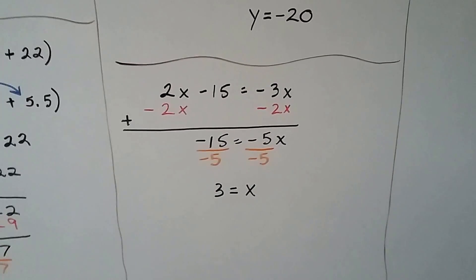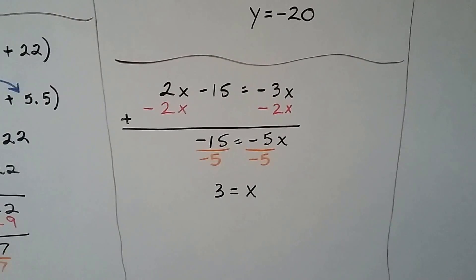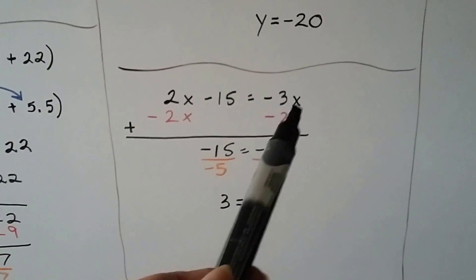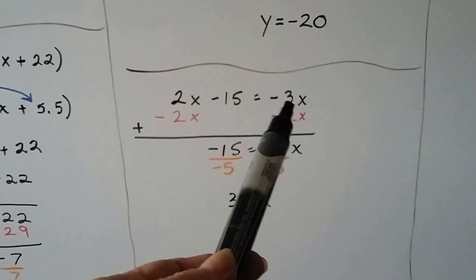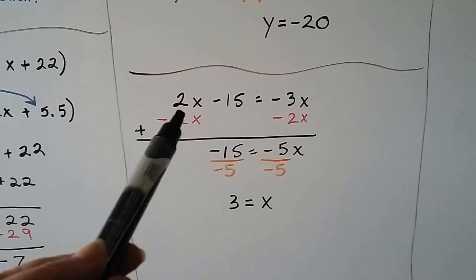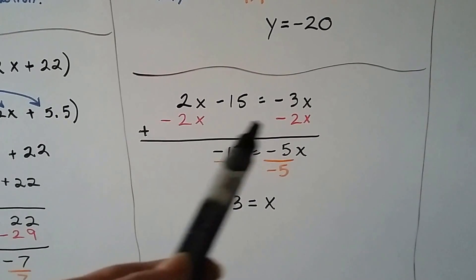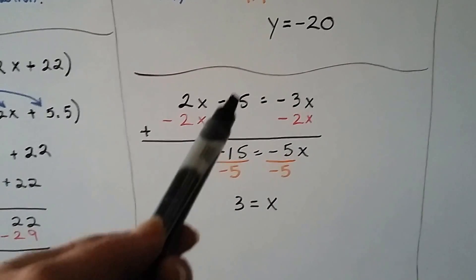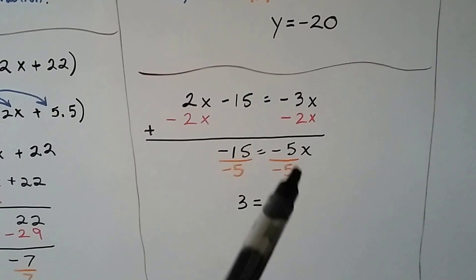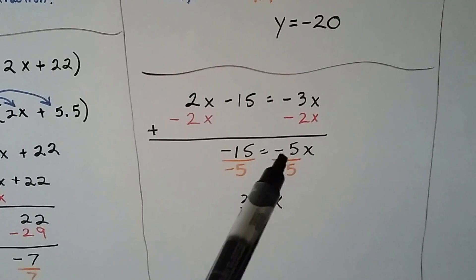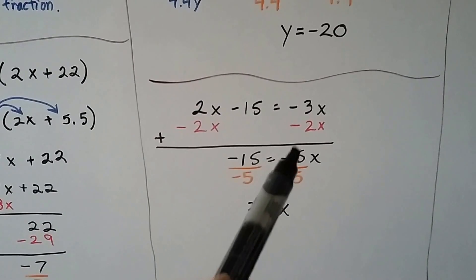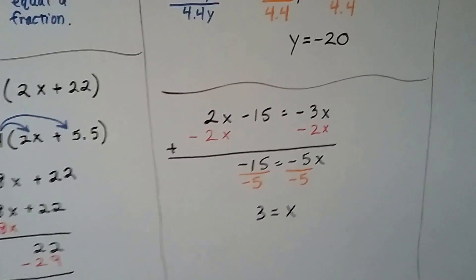One last one. We have 2x minus 15 equals negative 3x. Because we've already got this negative 3x on this side, we're going to leave the x's on that side and get rid of the x on the left side. So we add a negative 2x to both sides, and we get negative 15 equals negative 5x. We divide both sides by the negative 5 coefficient and we get positive 3 equals x — same numerator and denominator made a 1.